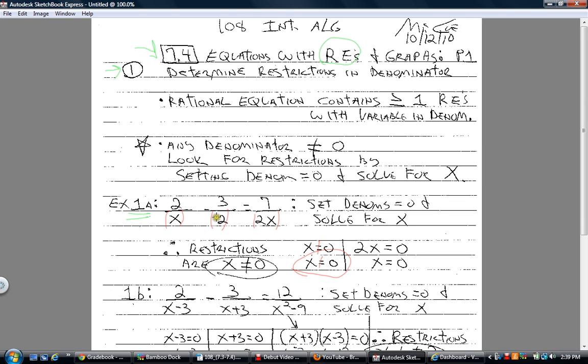2 is just a number. There's no variable, so you don't have to worry about that. Now you take 2x and you set it not equal to 0. Therefore, divide by 2 on both sides. And of course, x cannot equal 0. Therefore, your restrictions are that.